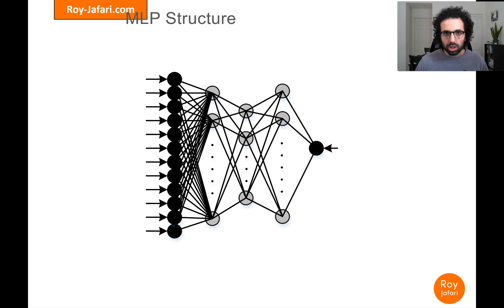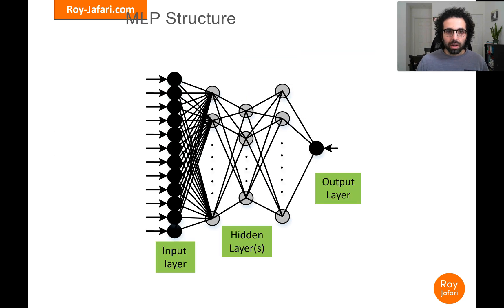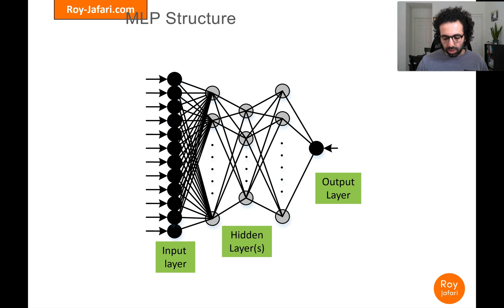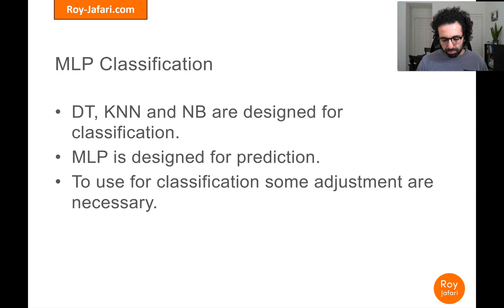I've talked about different aspects of MLP and how it works at a very intuitive level. If you haven't watched that video, please go back and watch it. The fact of the matter is MLP is not like Naive Bayes or Decision Tree, which are natively designed for classification — MLP is designed for prediction.